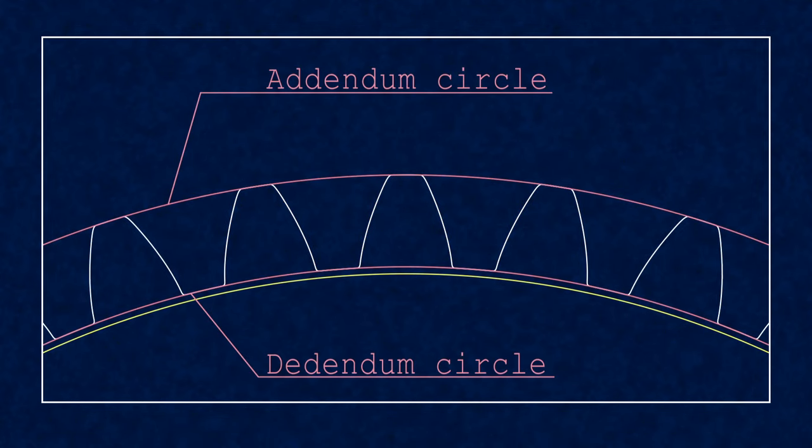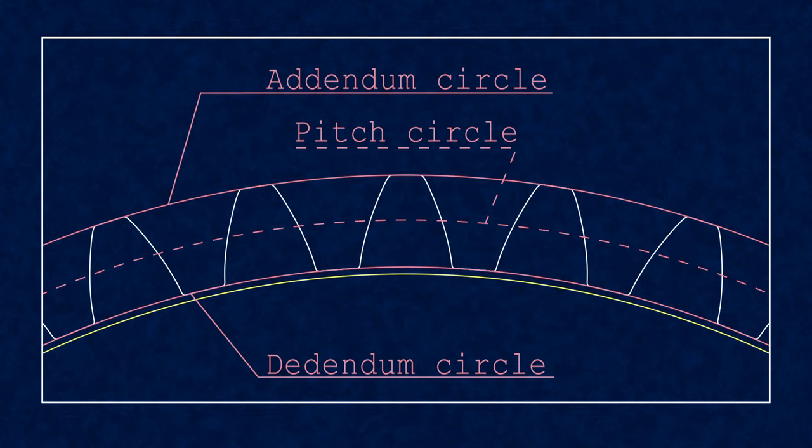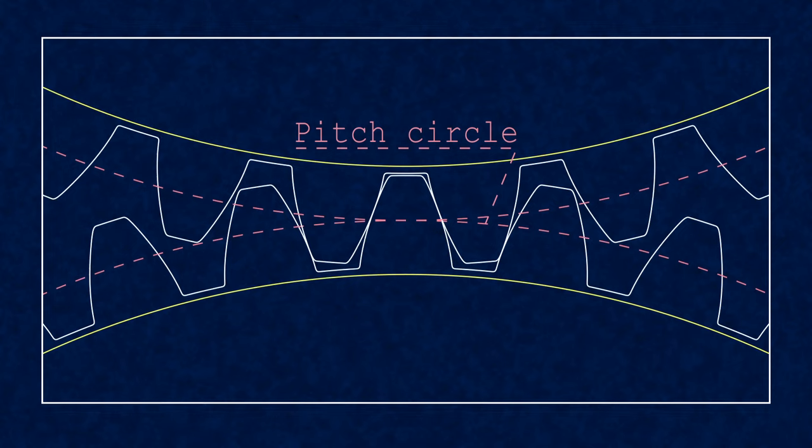Up top you have the addendum, down you have the dedendum, and in the middle you have the pitch circle. Two gears can mesh when their pitch circles touch.